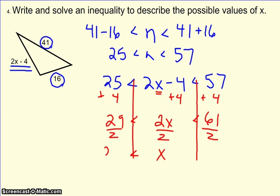So that tells me x was greater than 29 over 2, but less than 61 over 2, which would be my final answer.